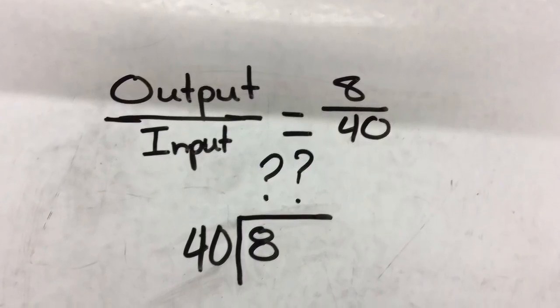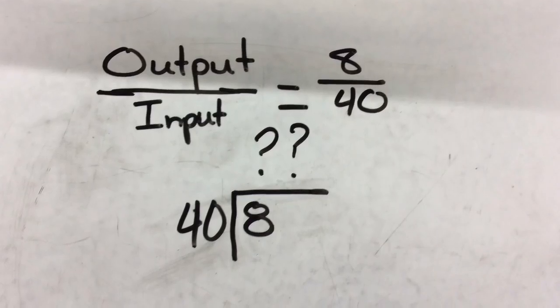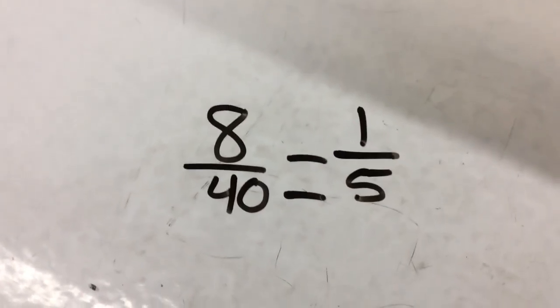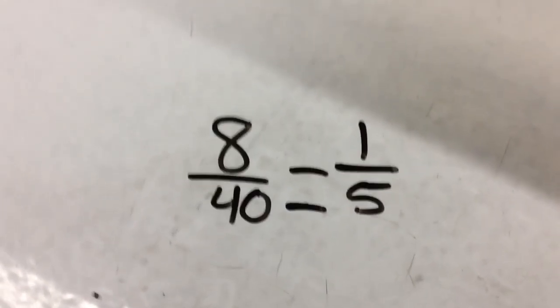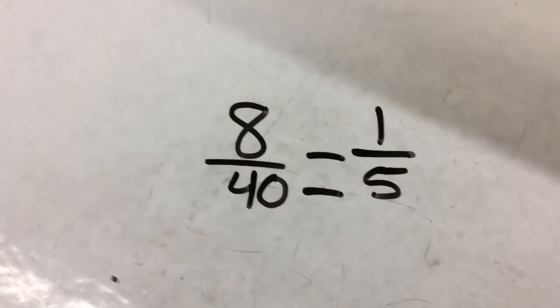So to get the gear ratio, you have to do output divided by input, which would be 8 divided by 40. The scale factor of 8 over 40 is 8, so 8 divided by 8 is 1, and 40 divided by 8 is 5, so you get 1 over 5.